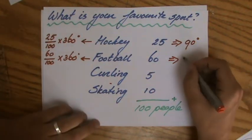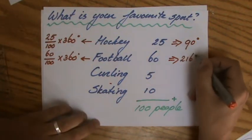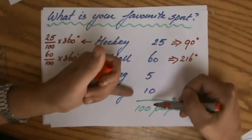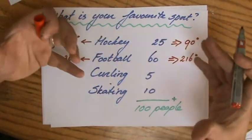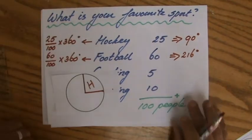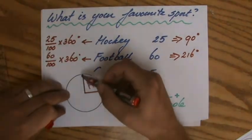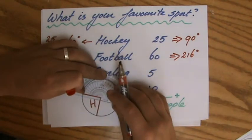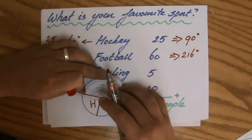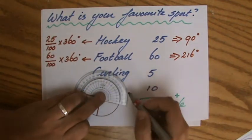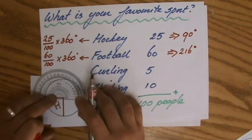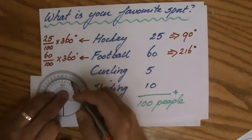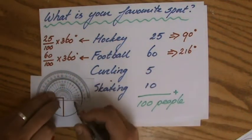Clearly football is the most popular sport, so it will get the biggest chunk of the pie chart, 216. Where should I continue? Let me continue from here. So 216, the angle 216, an obtuse angle—it's not going to fit on my paper, so I'll just cheat a little bit like this.